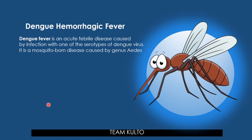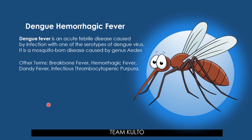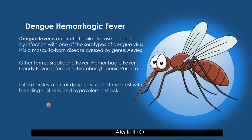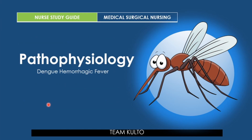Dengue is a mosquito-borne disease caused by the genus Aedes aegypti. It is also known as breakbone fever, hemorrhagic fever, dandy fever, infectious thrombocytopenic purpura. Dengue hemorrhagic fever is a fatal manifestation of dengue virus that presents with bleeding diathesis and hypovolemic shock. These viruses are related to those causing West Nile infection and yellow fever.